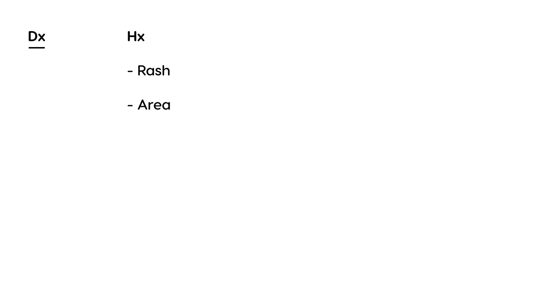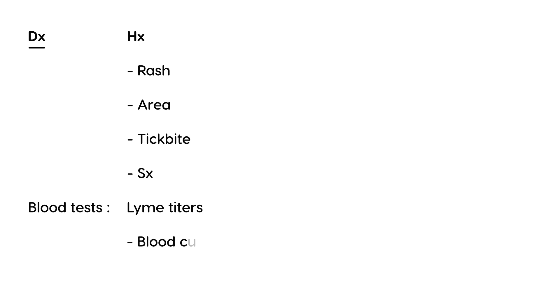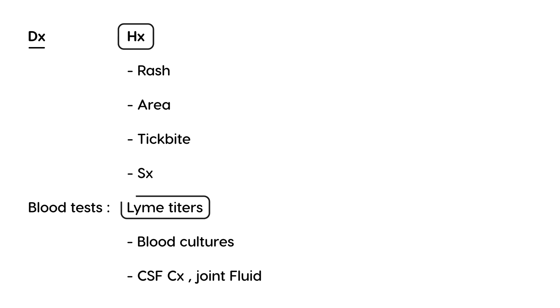The diagnosis is a combination of history — where a person presents with a rash and the classic history of exposure to an endemic area, a history of a tick bite, and some classic initial symptoms — along with blood tests. Those blood tests have an easy-to-remember name: Lyme titers. Physicians can also do blood cultures, CSF cultures if necessary, and since the joints are involved, joint fluid can be aspirated and tested. But really, the history and Lyme titers are usually the primary way to diagnose it.